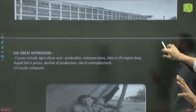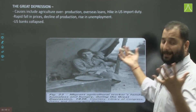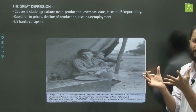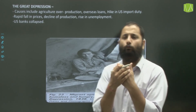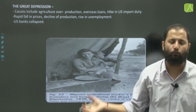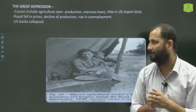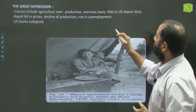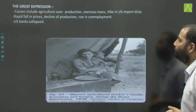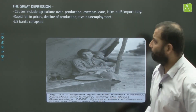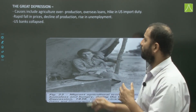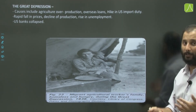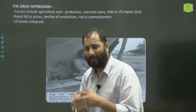Car production in the US rose from 2 million in 1919 to more than 5 million in 1929. Housing and consumer goods were sold on easy loans — what we now call EMIs. The consumer boom of the 1920s created the basis of prosperity in the US. But this was short-lived: the Great Depression arrived. Causes included agricultural over-production, decline in demand, overseas loans, hike in US import duties, and rapid fall in prices, leading to decline in production, rise in unemployment, and finally the complete collapse of the US banking system.